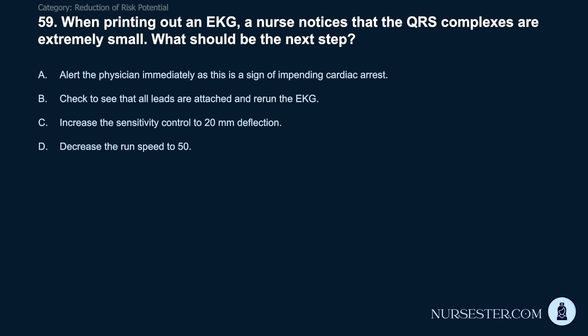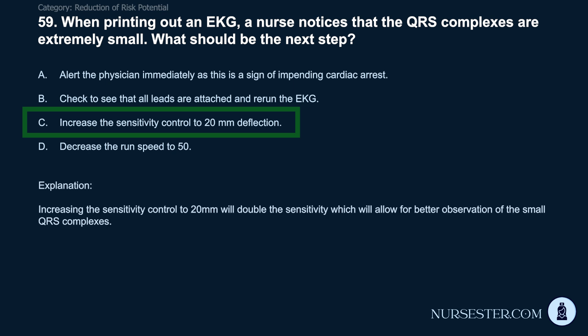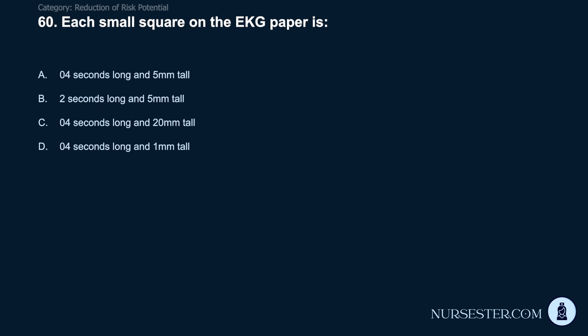Question 59: When printing out an EKG, a nurse notices that the QRS complexes are extremely small. What should be the next step? A) Alert the physician immediately as this is a sign of impending cardiac arrest. B) Check that all leads are attached and rerun the EKG. C) Increase the sensitivity control to 20mm deflection. D) Decrease the run speed to 50. Correct answer: C. Increase the sensitivity control to 20mm deflection. Increasing the sensitivity control to 20mm will double the sensitivity, allowing for better observation of the small QRS complexes.